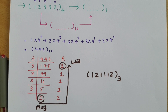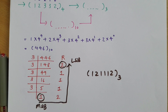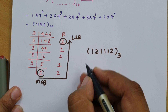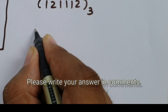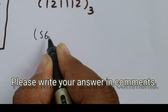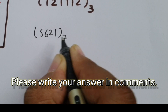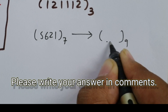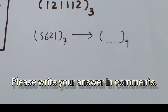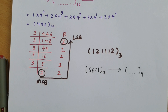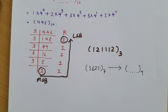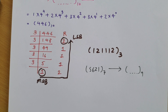Here is a homework problem: convert 5621 in base 7 into base 9. First convert it into decimal, then convert that into base 9. Write your answer in the comments so I can verify your understanding. Based on your suggestions and comments, I will make future videos to resolve your queries. Thank you for watching.